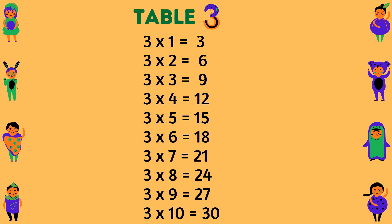Table of 3. 3 times 4 equals 12. 3 times 5 equals 15. 3 times 6 equals 18. 3 times 7 equals 21. 3 times 8 equals 24. 3 times 9 equals 27. 3 times 10 equals 30.